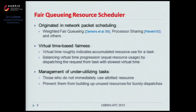One important issue for fair queuing schedulers is the management of underutilizing tasks — tasks that do not immediately use their allocated resources, with some idle time during execution. If these tasks build up unused resources and dispatch them in a single large burst, that causes long delays for all other tasks. A fair queuing scheduler must have a mechanism to prevent underutilizing tasks from building up unused resources for bursty dispatches.